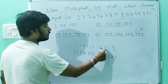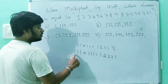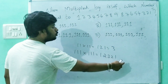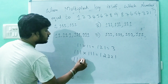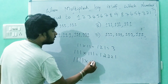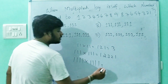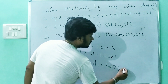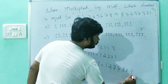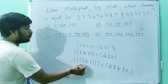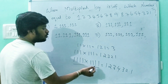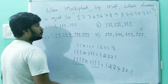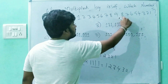So 11 into 11 gives 1, 2, 1. Now suppose 4 ones into 4 ones — multiply and you get 1, 2, 3, 4, 3, 2, 1. Using this logic, 4 digits into 4 digits gives you a 7-digit result.